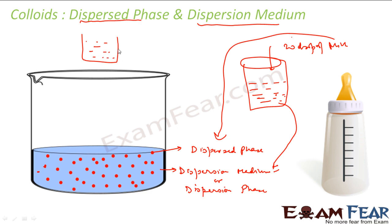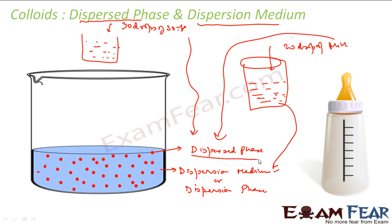More examples: in soap and water, I add about 30 drops of soap to water. The soap becomes the dispersed phase and the water is my dispersion medium. Please remember these two terms — dispersion medium is where you are dissolving the colloidal particles, and the colloidal particles themselves are called the dispersed phase.